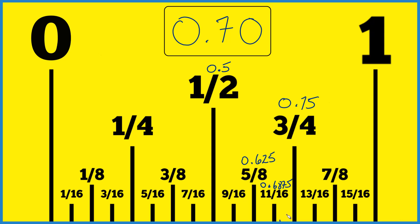You could divide this into 32nds or 64ths and keep doing what I'm doing to get more exact, but this is pretty close. So if you want to find 0.7 inches on a ruler or a tape measure, it's a little bit bigger than 11 sixteenths of an inch.